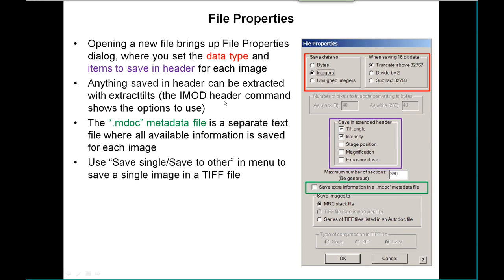When you save information in the extended header, it can be extracted with the extract tilts command in IMOD. When you run the IMOD header command, it shows you exactly what's in the header and which options to use to extract that particular kind of data. Extract tilts also understands the same kind of data if it's coming from one of these MDoc files. If you want to save a single image to a TIFF file, use the Save Single or Save to Other menu item, and the TIFF file option becomes enabled.